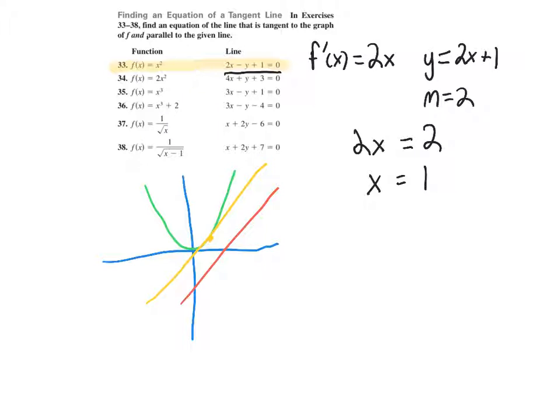Well, we still want our point on our function. So what we are going to do is plug that back into the original function, which is f of x equals x squared. So we will do f of 1 equals 1 squared, which equals 1. So our point of tangency that has the line going through it is at 1, 1.